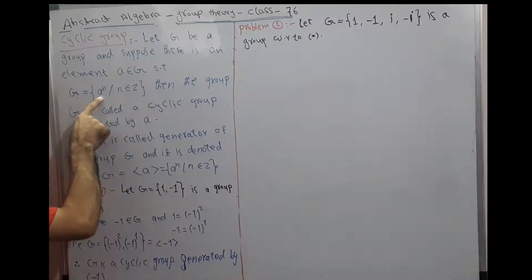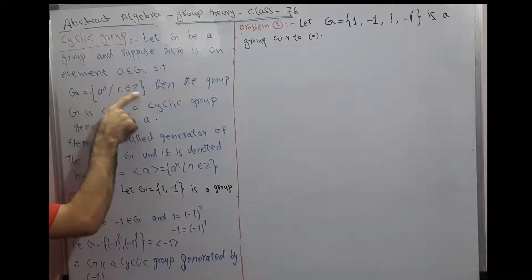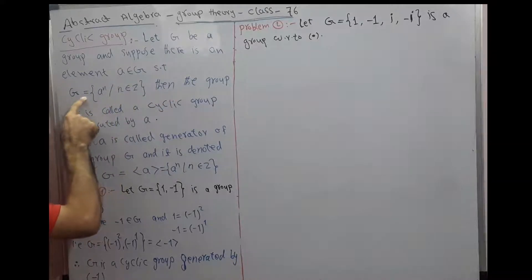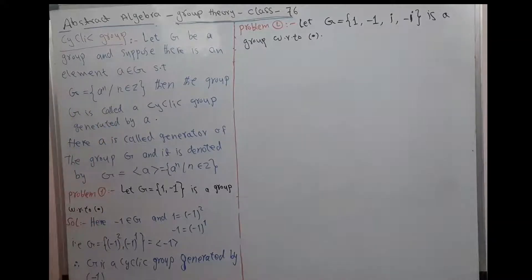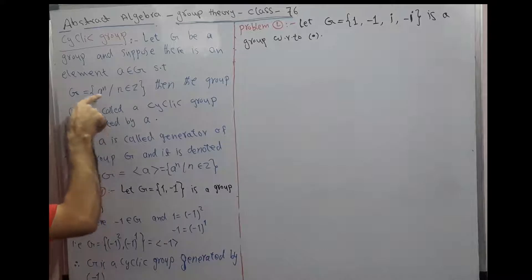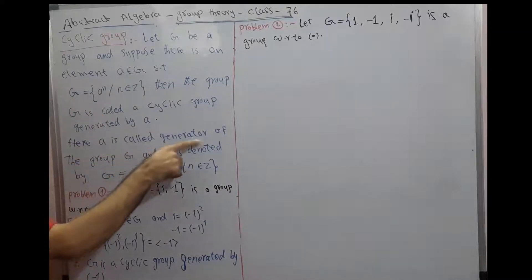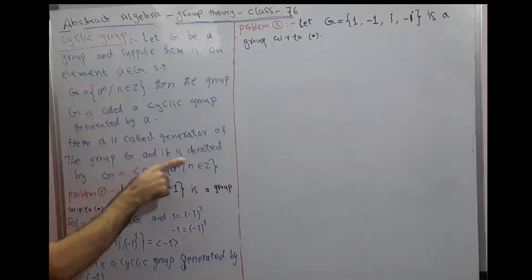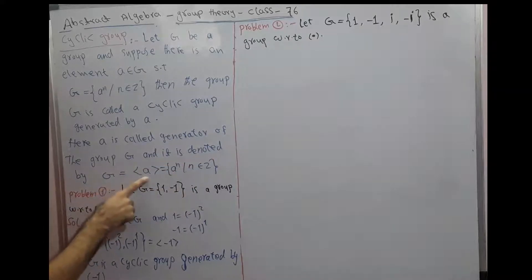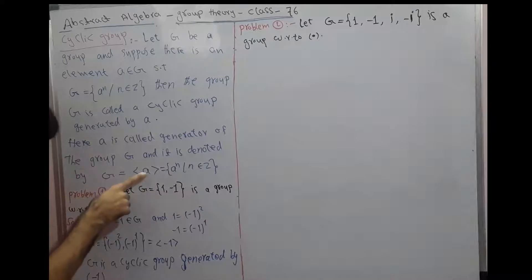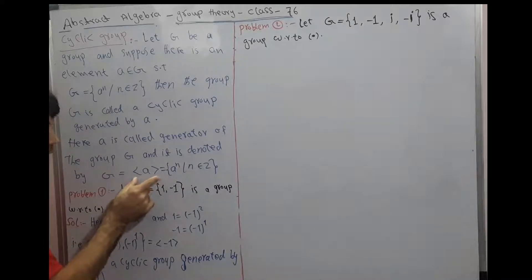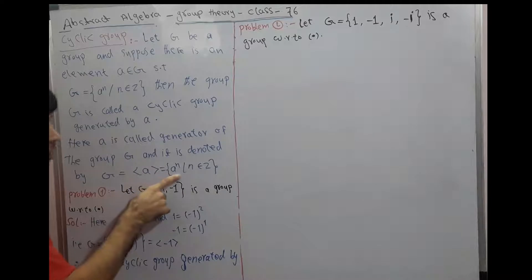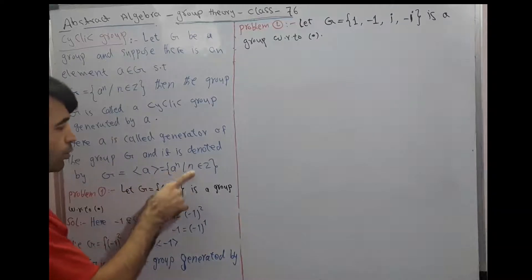Every group which we can write as a^n for n ∈ Z is called a cyclic group. a is called a generator of G, and G is called a cyclic group generated by element a. Here a is called the generator of the group G, and it is denoted G = ⟨a⟩. The cyclic group generated by a is equal to {a^n | n ∈ Z}. This is the definition of cyclic group.